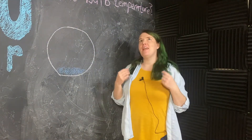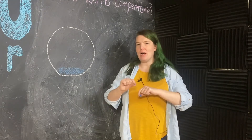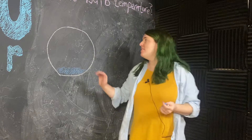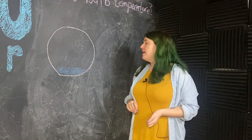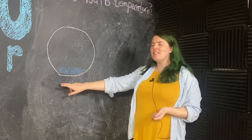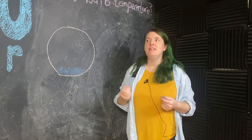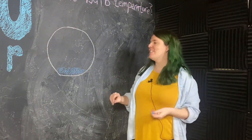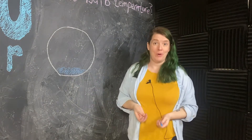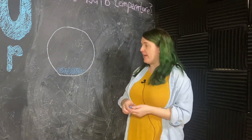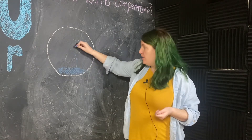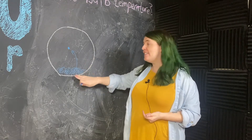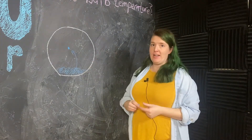Wet bulb temperature is the temperature an air parcel has once we cool it down by evaporating water vapor into it. So let me explain. This circle is our air parcel for all intents and purposes, and I've drawn a super physically realistic small pool of water here at the bottom. In reality, we're talking about little bits of liquid water that are suspended in the air as opposed to water vapor, but for visual purposes, imagining a small pool of water is actually going to be a little bit more helpful.